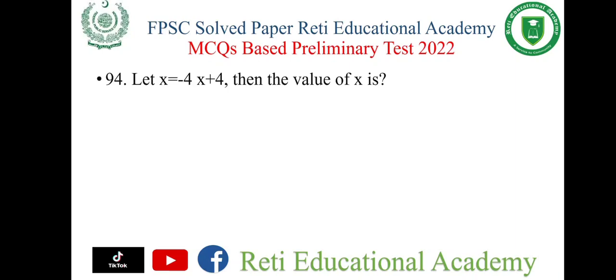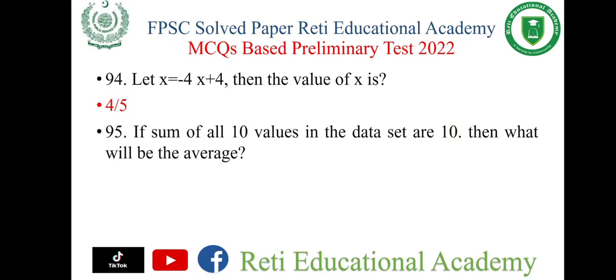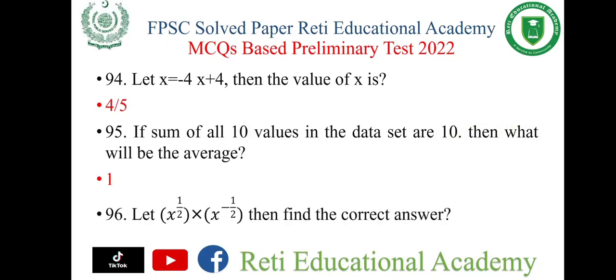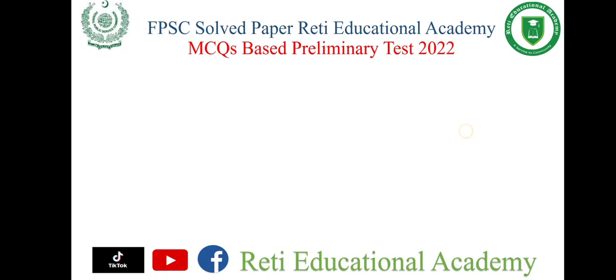Question number 94: Let x = minus 4 into plus 4. Then the value of x is 4 upon 5. Question number 95: If the sum of all 10 values in the data set is 10, then the average is 1. Question number 96: Let x power 1/2 into x power minus 1/2 — the right answer is 0.